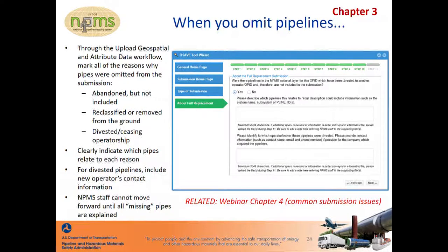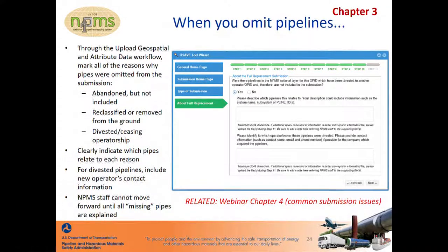In addition to describing which pipelines were divested, you'll be prompted to supply contact information about the new operator — any and all information is appreciated: an OPID, company name, contact person's name, email, and phone number. We'll look for these pipelines in the new operator's submission, or we'll reach out to the new operator if we haven't yet received a submission, so that we do not lose track of these divested pipelines.